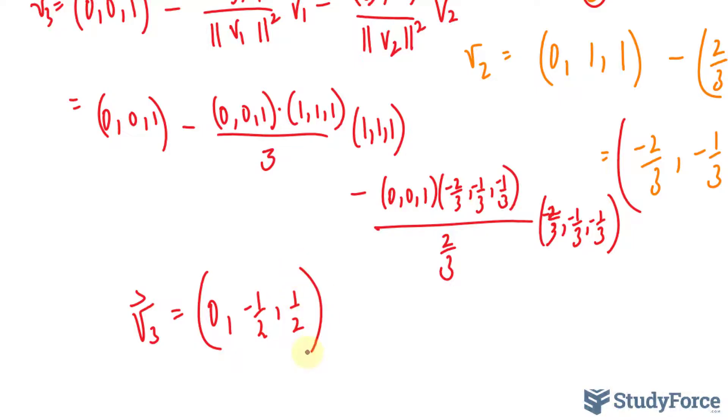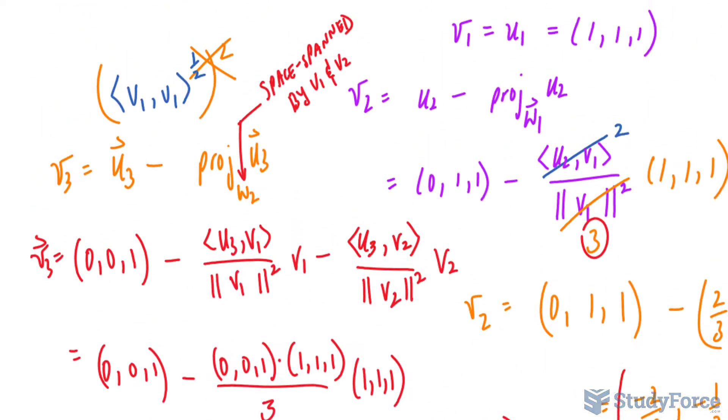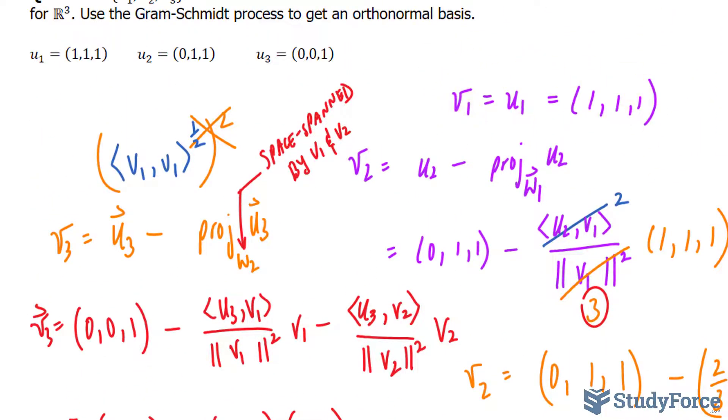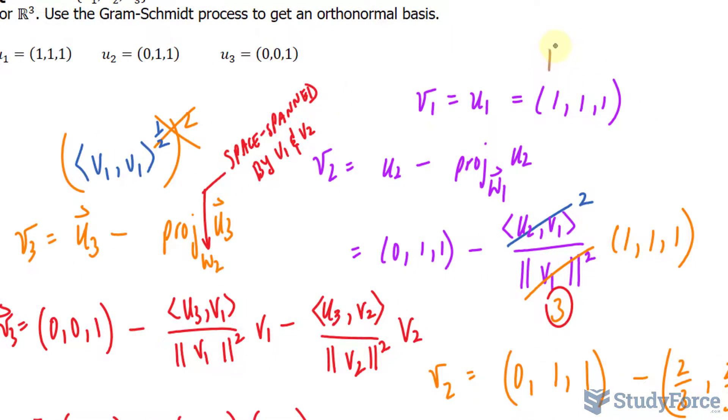To get the orthonormal basis, we divide each vector, V sub 1 through V sub 3, by its norm. So now we have to find the norm of each of these. Let me go back to this one. To find the norm of V sub 1, we will take each of these, multiply it by itself, and square root it. So we get the square root of 3 for here.